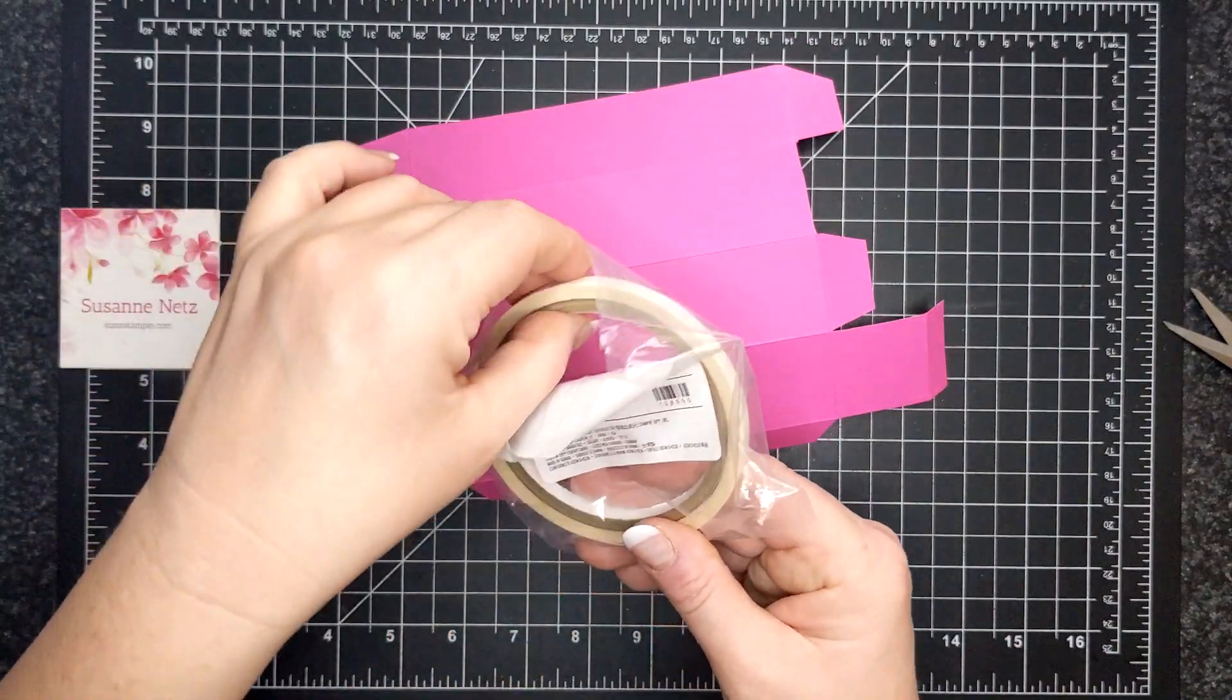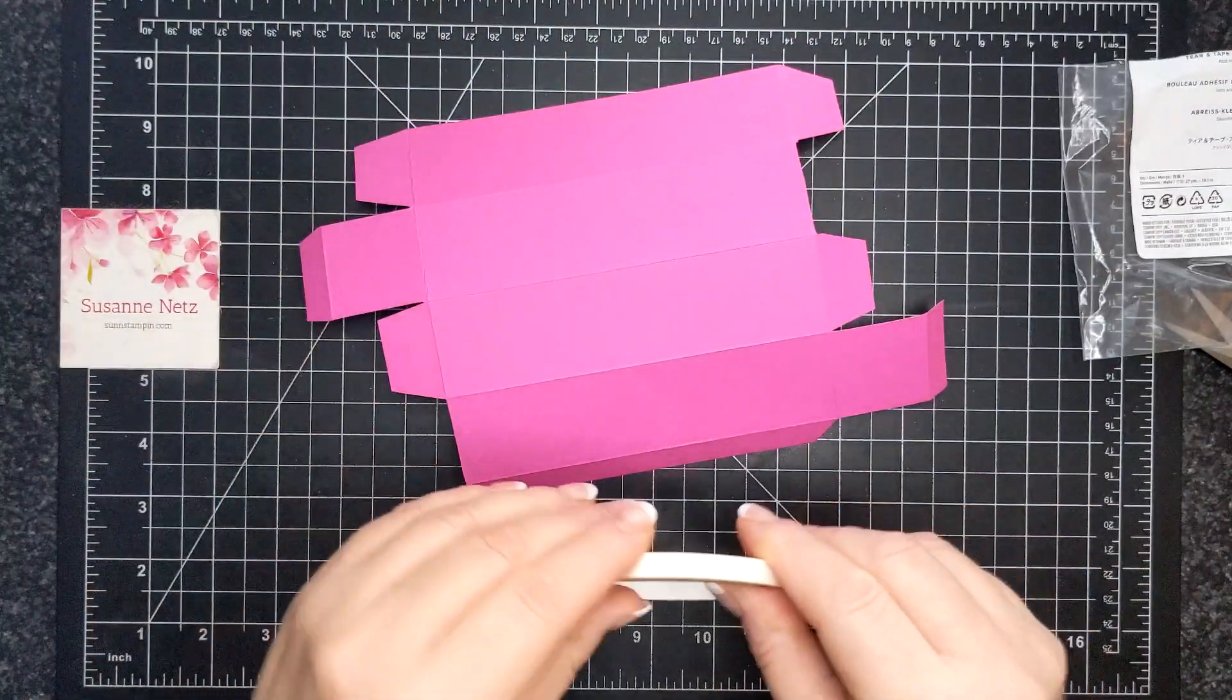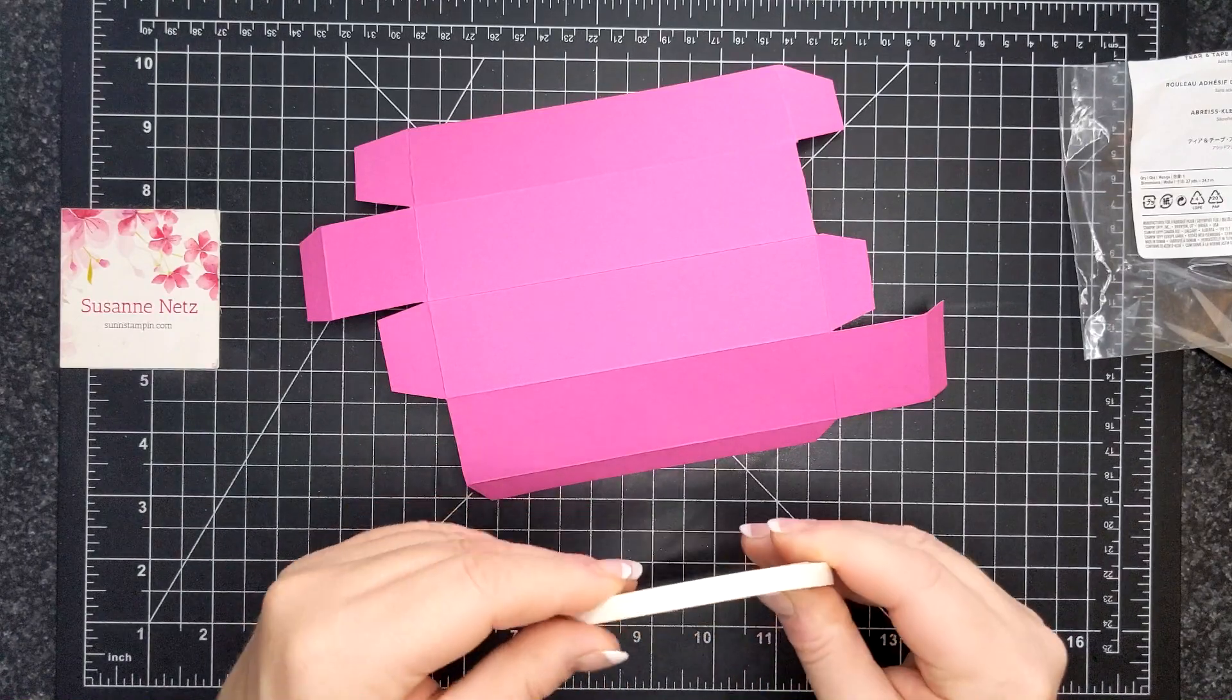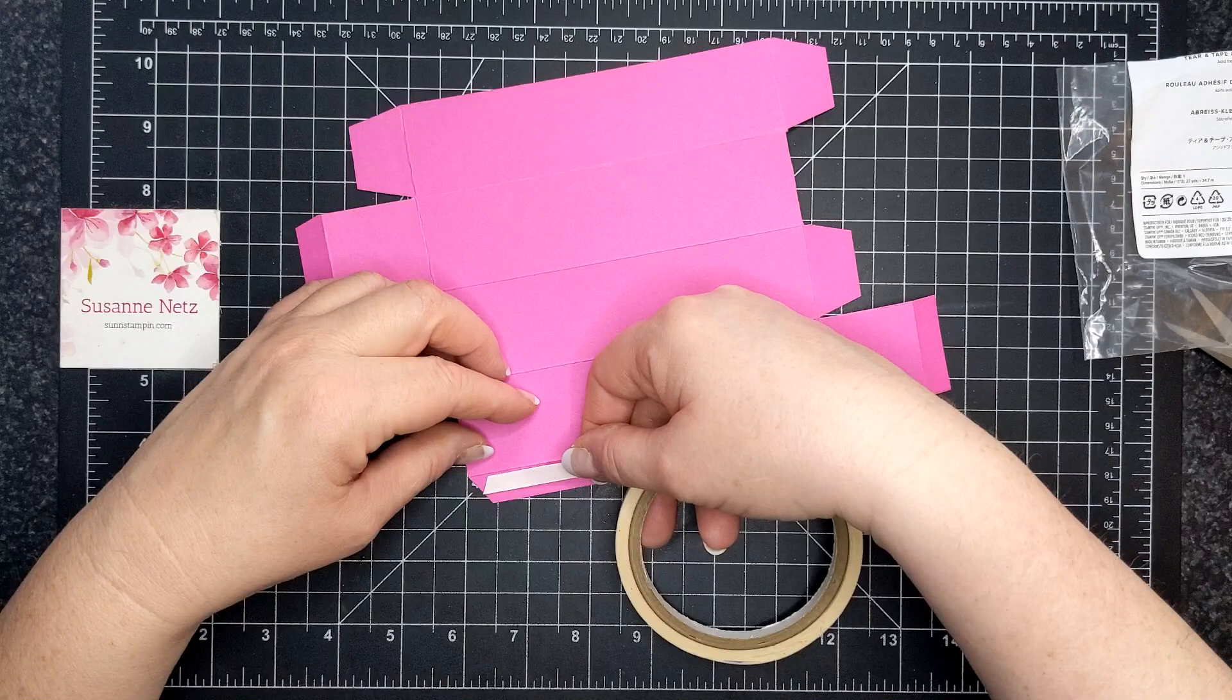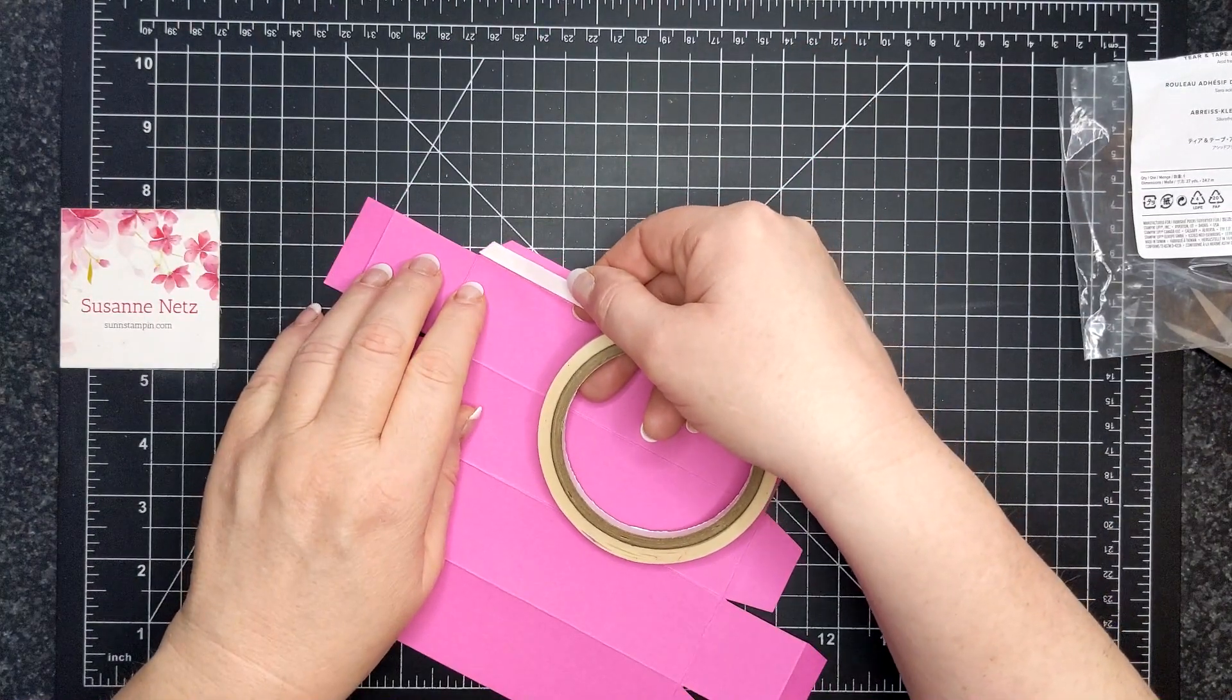I am going to put the tear and tape adhesive on this wee little box. There's a better angle on that side.